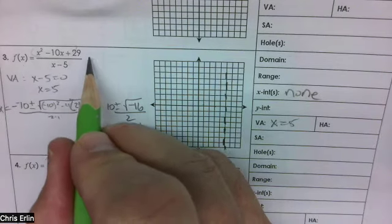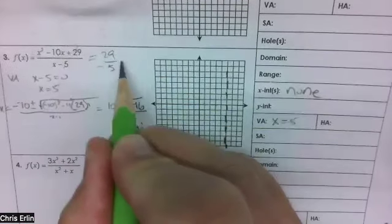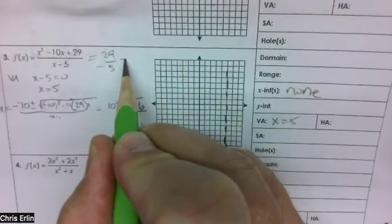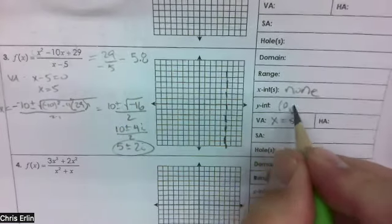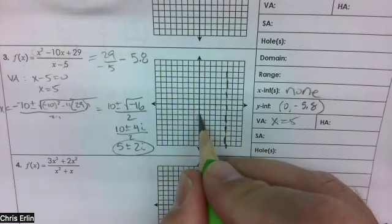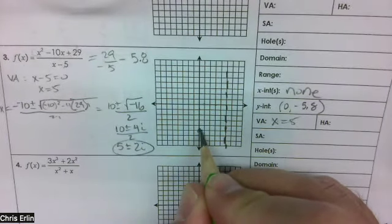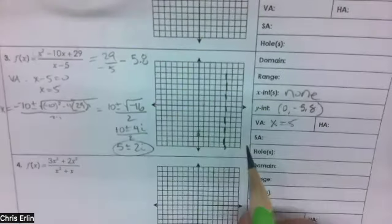Do we have any y-intercepts? Well, the y-intercepts happen when x equals 0. So this would be 0, 0, 29 over negative 5. So what is that? Negative 5.8. So that's 0 comma negative 5.8. One, two, three, four, five point four.